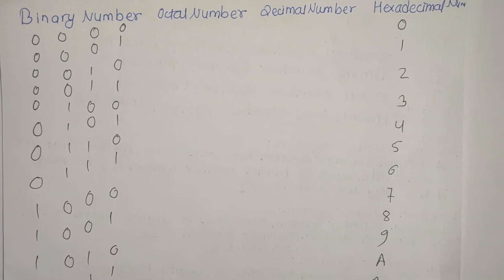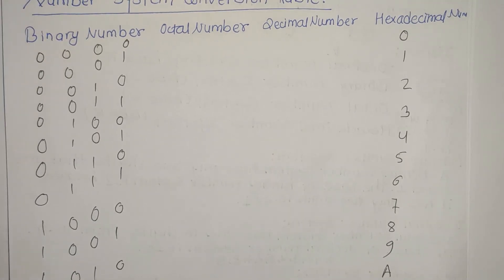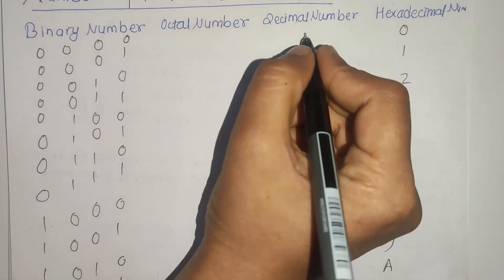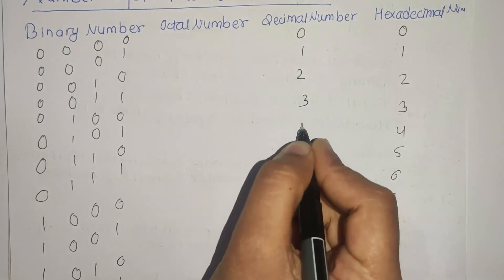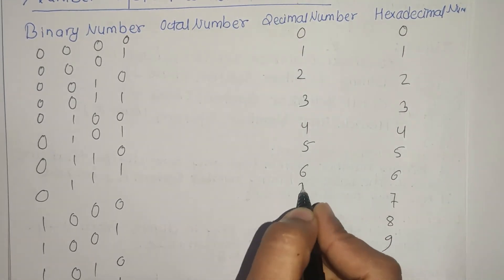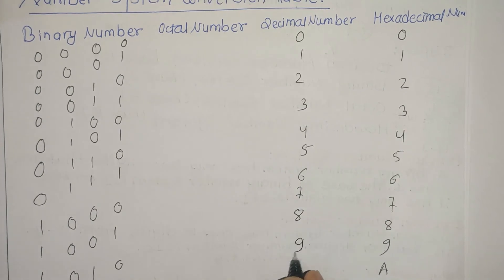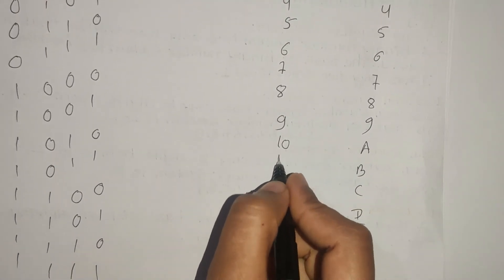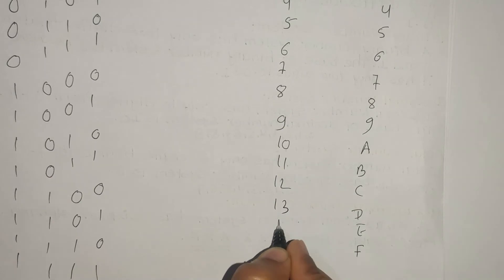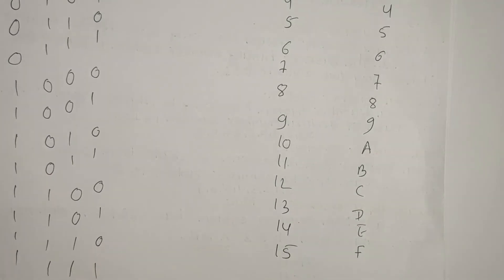Now in the octal number system column. In decimal, the values are normally written as 0, 1, 2, 3, 4, 5, 6, 7, 8, 9, 10, 11, 12, 13, 14, 15.